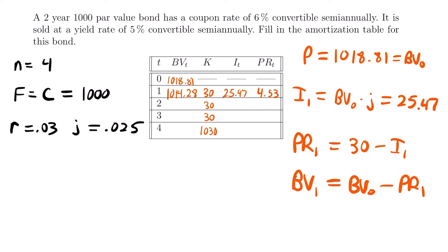For time two: the interest equals the yield rate times the book value at time one, giving I sub 2 equals 25.36. The principal at time two equals 30 minus 25.36, which is 4.64. The book value at time two equals 1014.28 minus 4.64, which is 1009.64.